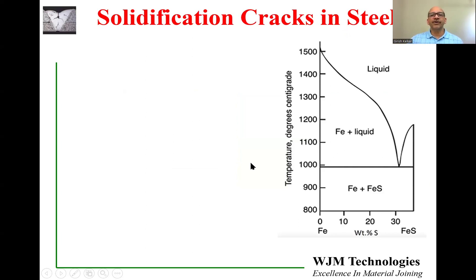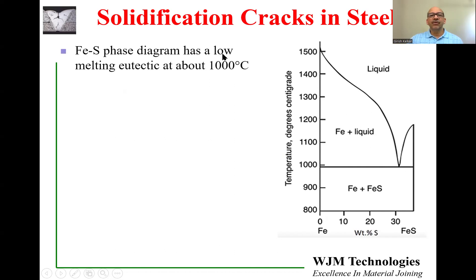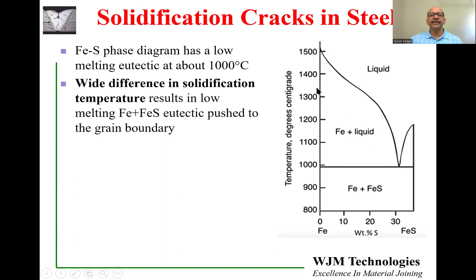Now let's look at solidification cracks, especially in steels. To the right, I am showing you a portion of the iron–iron sulfide phase diagram, showing the iron axis from pure iron up to 30% sulfur, with temperature on the vertical axis. The melting point of iron is about 1500°C, and the melting point of the iron–iron sulfide eutectic is 1000°C. This low-melting eutectic at 1000°C is the main culprit in solidification cracking. The main requirement for solidification cracking is this wide temperature difference between solidification of the main grains and solidification of the eutectic.